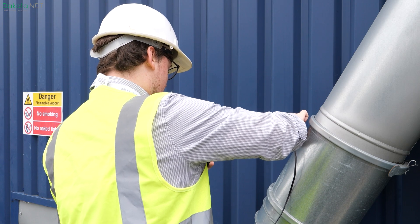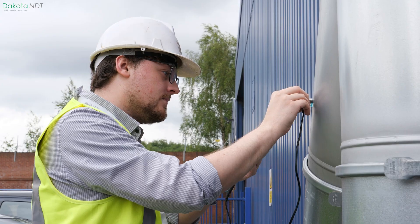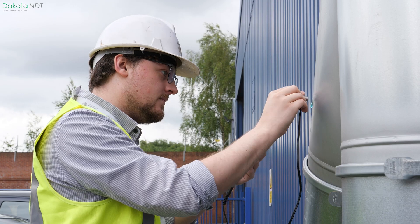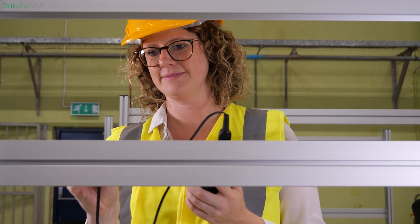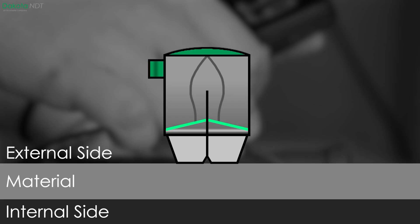All the Dakota NDT ZX gauges are capable of measuring in pulse echo mode, which is versatile and commonly used in various NDT applications. In this mode, the gauge sends out a pulse of ultrasound that travels through the material being tested and bounces back to the transducer. The gauge then measures the time it took for the pulse to echo back, multiplying it by the specified material velocity to calculate its thickness.